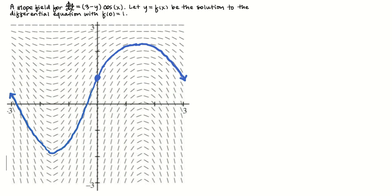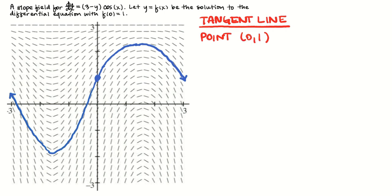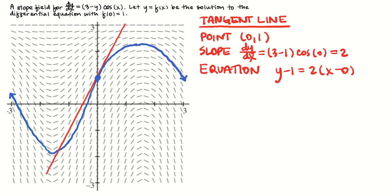We can also write an equation for the line tangent to the graph of f at x equals 0 by finding a point and the slope at that point. That's going to be equal to 2 because the cosine of 0 is 1. Now that I have that, I can write down my equation. I can use that equation to approximate the value of f at x equals 1. So I plugged in x equals 1 and solved for y, and I got 3.